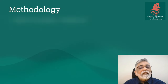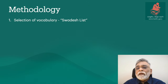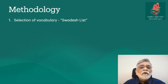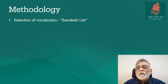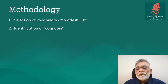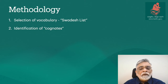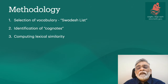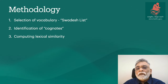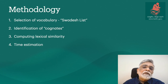The methodology linguists use in glottchronology normally involves four steps. First, the selection of vocabulary: linguists typically use what's called the Swadesh list, a set of basic vocabulary thought to be less subject to change or borrowing. Second, identification of cognates: words that share a common origin between two languages are identified as cognates. Third, computing lexical similarity: the percentage of cognates shared between two languages is computed.